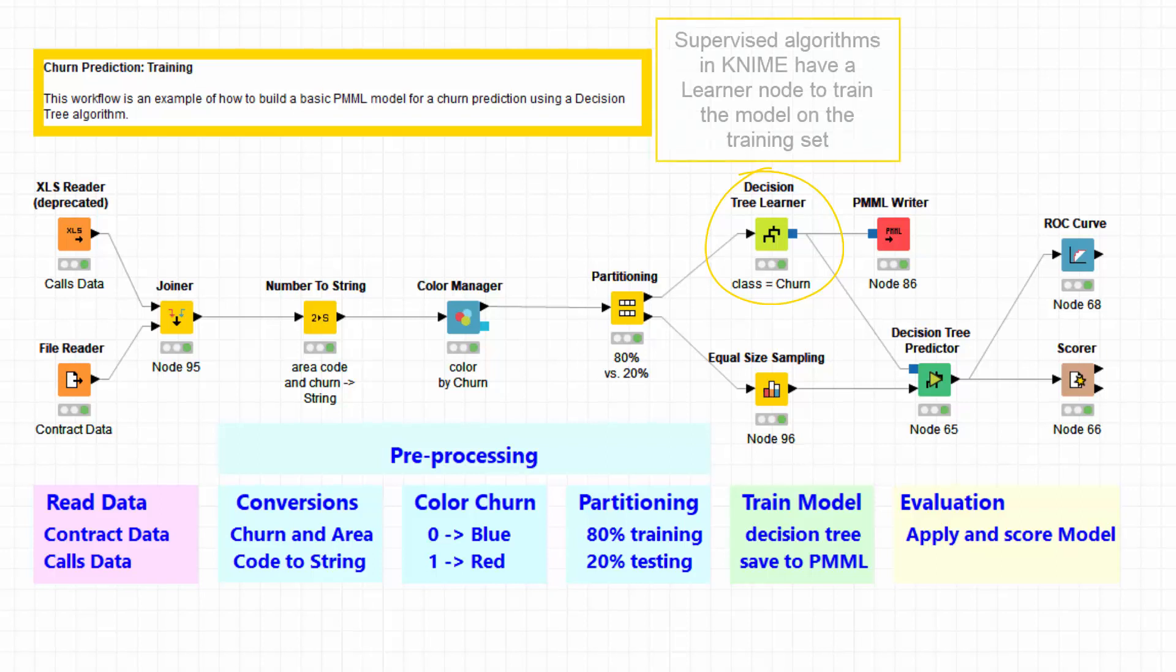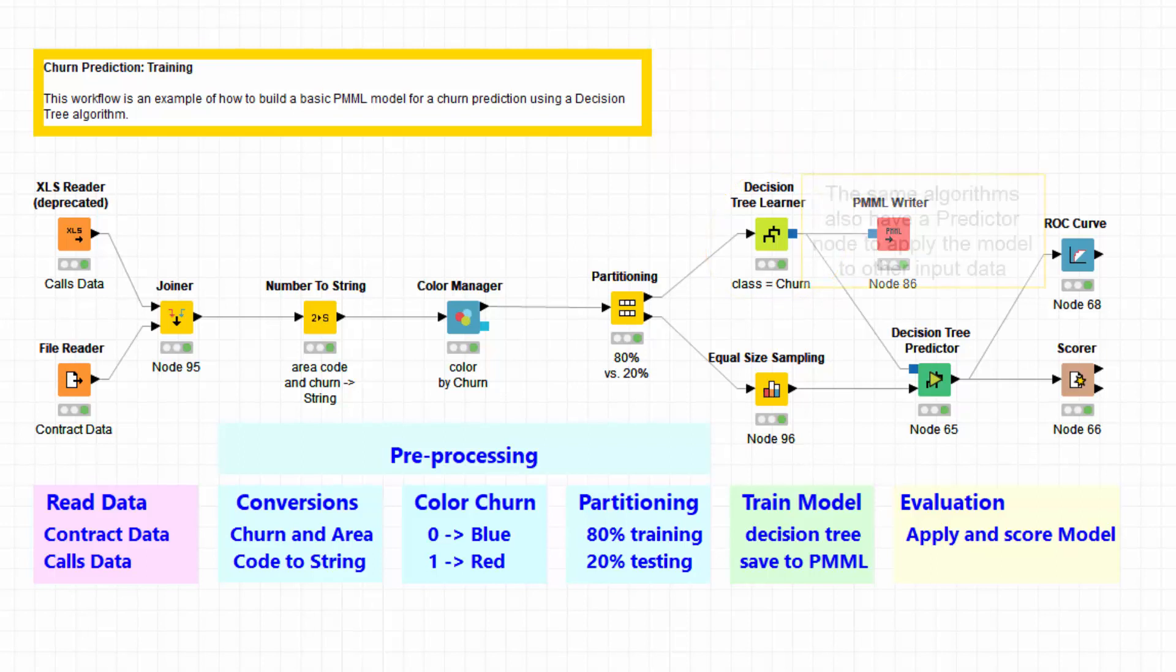Supervised algorithms in KNIME have a learner node to train the model on the training set. The same algorithms also have a predictor node to apply the model to other input data. For the test phase, the predictor node is used to apply the trained model to the test data.